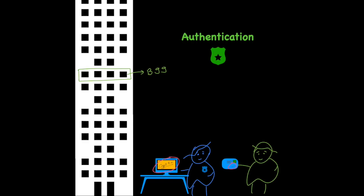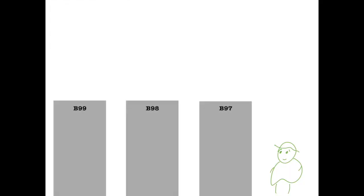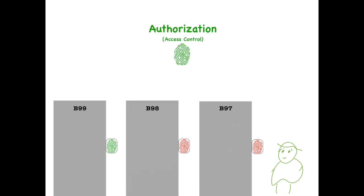Once you enter the building, you realize that the building has offices of many other companies. Each company has their own access systems and you have access only to your office. So even though you are able to enter the building, you are authorized to access only a part of it. This is authorization, or access control.